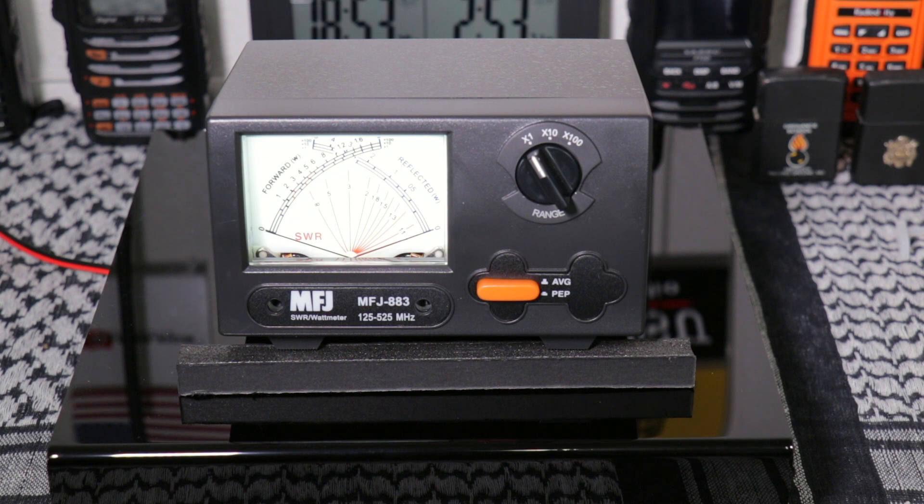This is the MFJ 883. It goes from 125 to 525 megahertz. It can handle power range of 0 to 200 watts. Power scale is 2 watt, 20 and 200 watts. Maximum power 200 watts. You can do forward, reverse power, PEP and SWR. It's 140 millimeters wide, 84 millimeters high and 122 millimeters deep. It comes with an operating manual and the 13.8 DC wire so that you can turn on the light.